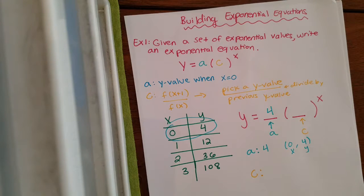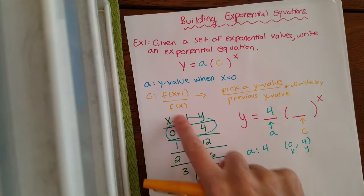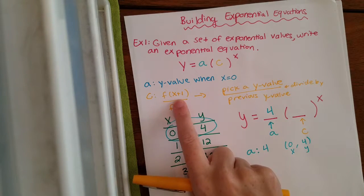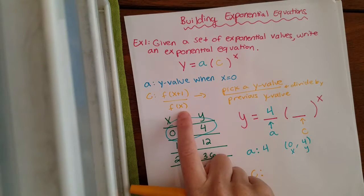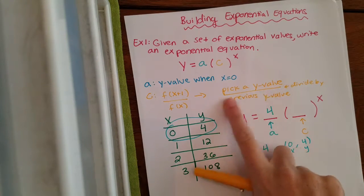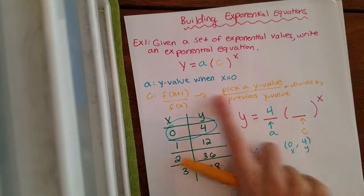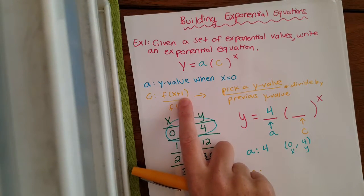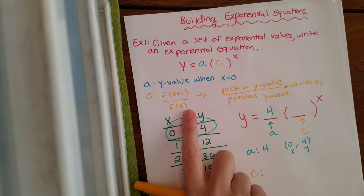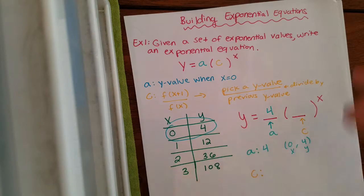Now, the c value on the Prezi side, I told you that c was this right here. So I said it meant f of x plus one divided by f of x. So all that means, you pick some y value and you divide it by a previous y value. So you pick a y, x plus one is one larger than x. So you pick a y and you divide it by the previous y.